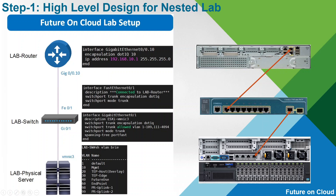Although this is not part of the lab, you can use the same scenario for actual deployment — obviously you need to add multiple links to achieve redundancy. This is how I have configured my switch: GigabitEthernet 0/1 is configured as a trunk, and FastEthernet 0/1 is also configured as a trunk, because I am using sub-interfaces on my physical router.